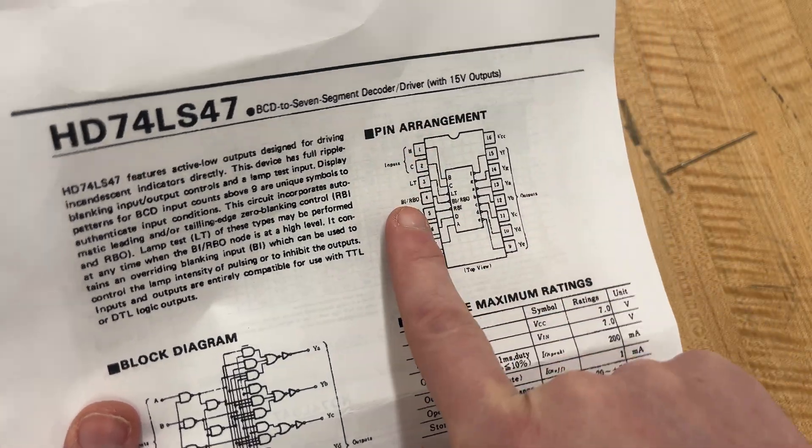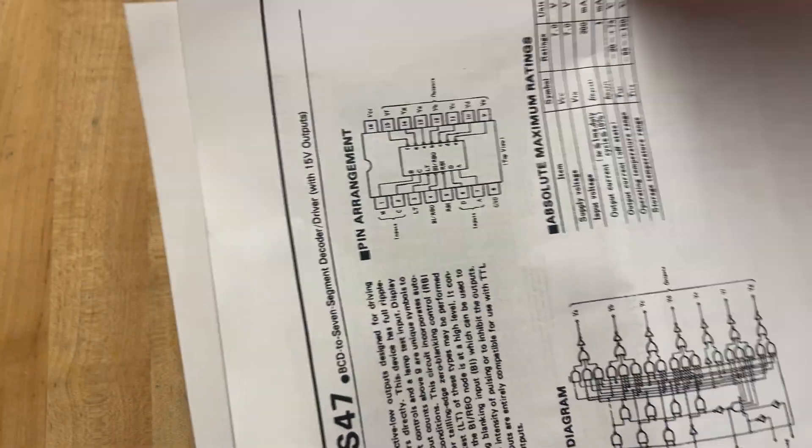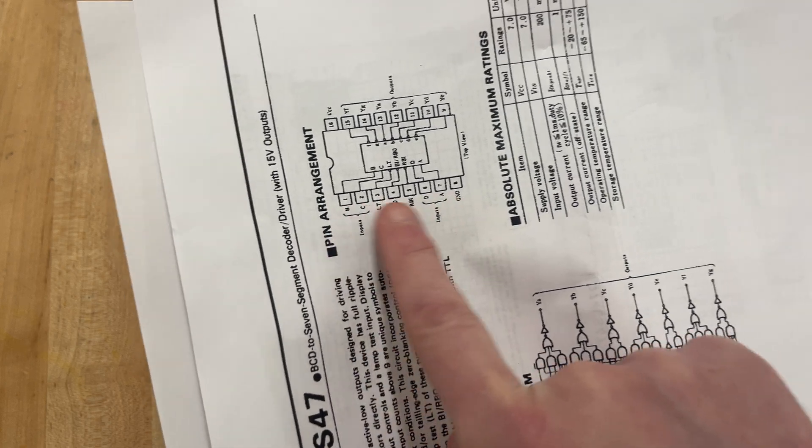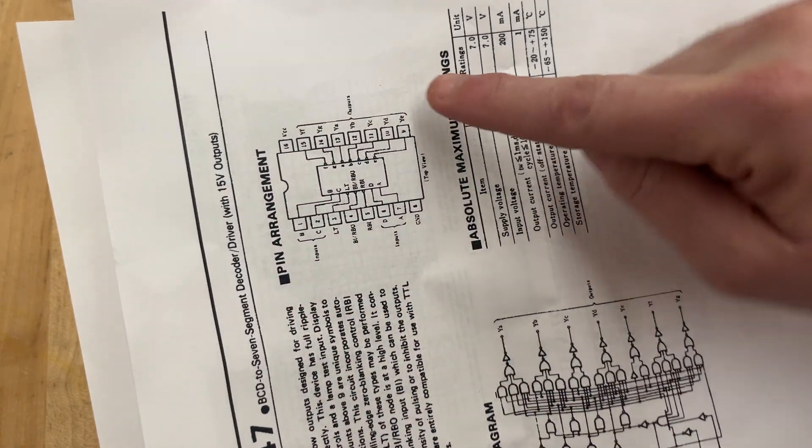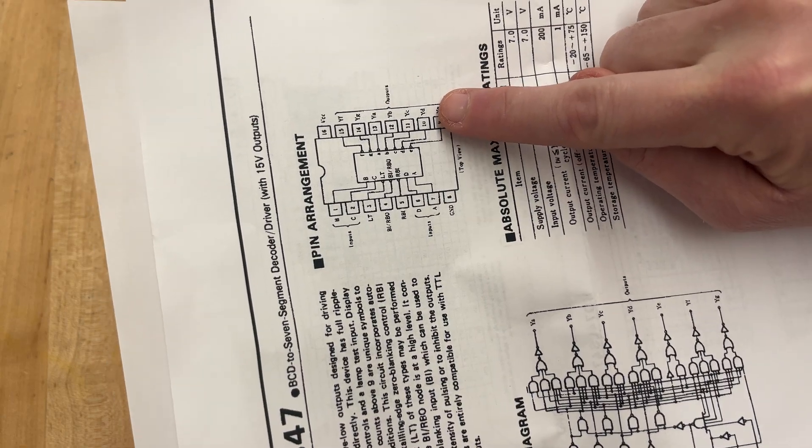So these ones come in, and so on the breadboard it looks like this. These are coming in from your dip switch, and these are going out to a resistor and then eventually to your seven-segment decoder.